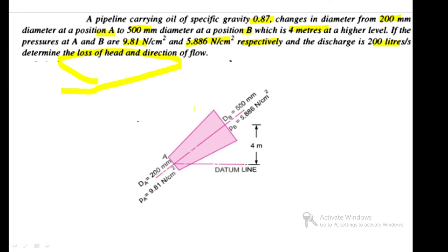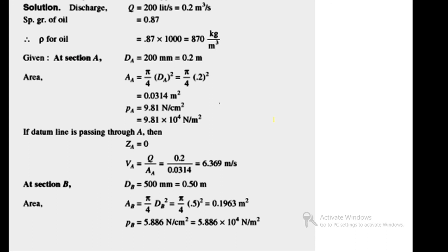Here is the solution. Based on the diagram: diameter at A is 200 mm, pressure 9.81; at section B, diameter 500 mm, pressure 5.886. The datum is the zero reference, so ZA = 0 and ZB = 4 meters. Convert all units to meters and substitute into Bernoulli's equation. Discharge is 200 liters per second, converted to m³/s. Specific gravity is 0.87.